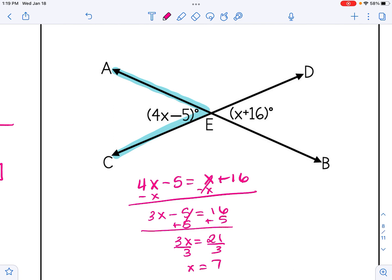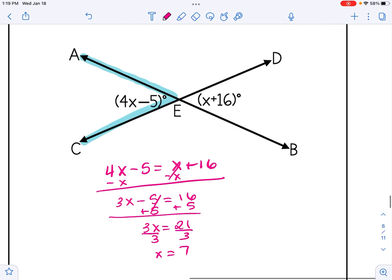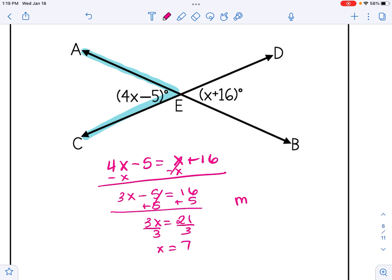I got X is equal to 7, but recall that we want to find the measure of angle AEC. So I'm going to take that information and plug it into the expression 4X minus 5. And when I do that, I'm going to get 23 degrees as my answer. Hopefully this video was a good introduction and helped you understand vertical angles and their relationship. Thank you.